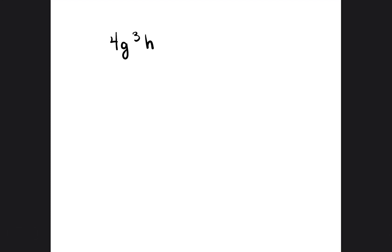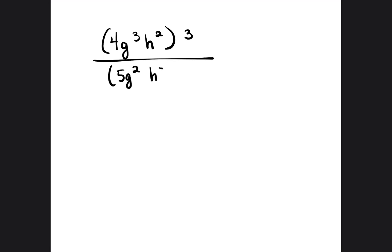Let's go ahead and do the next problem: 4g to the third power h squared, all over 5g squared h to the negative 3, raised to the negative 2. The first thing we're going to do again is distribute the exponents that are outside the parentheses to everything inside.